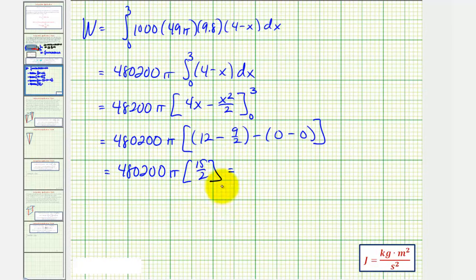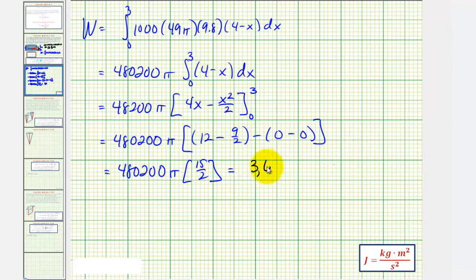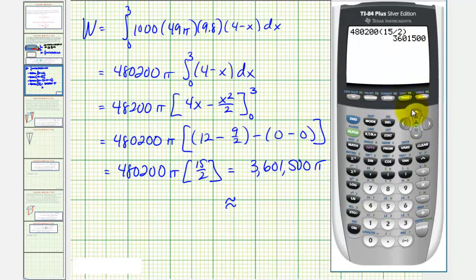Let's find the exact value on the calculator. So we'll leave pi in the product. 480,200 times 15 halves gives us 3,601,500 pi. The units would be kilograms times meters squared divided by seconds squared, which is joules. Let's also get our decimal approximation for this. We'll multiply this by pi, giving us 11,314,445.94 joules. I hope you found this helpful. We'll see you next time.